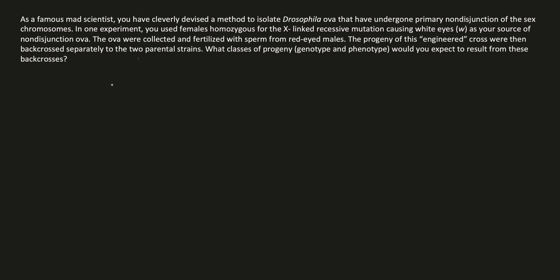The problem we're going to cover today is about primary and secondary non-disjunction, and what happens when you cross the ova and the sperm of non-disjunction back to the parents. In this situation, as a famous mad scientist, you have cleverly devised a method to isolate Drosophila ova that have undergone primary non-disjunction of the sex chromosomes.